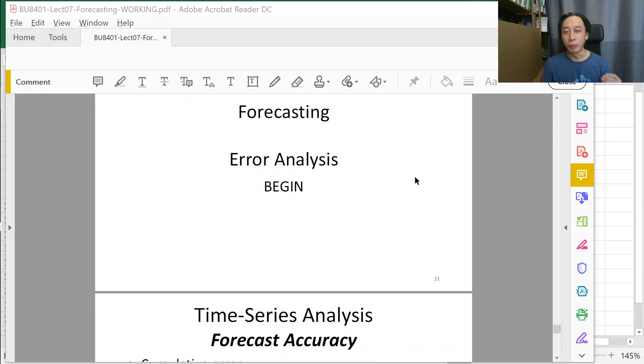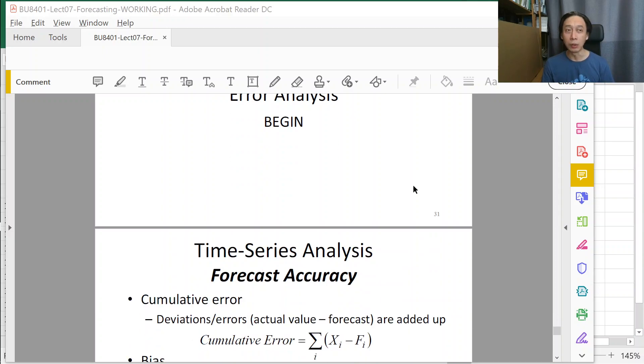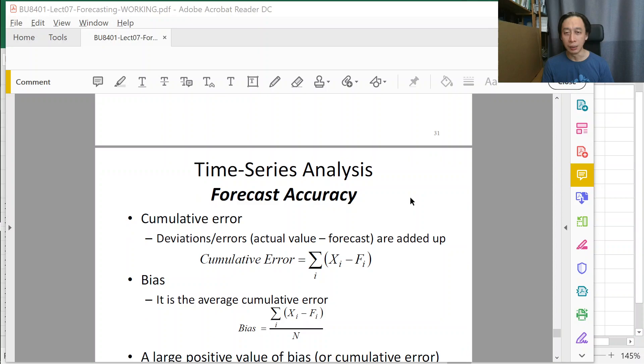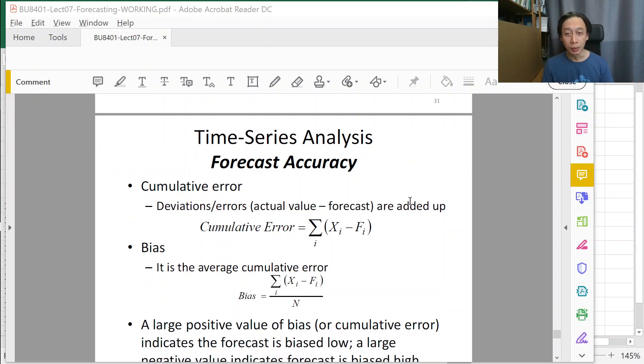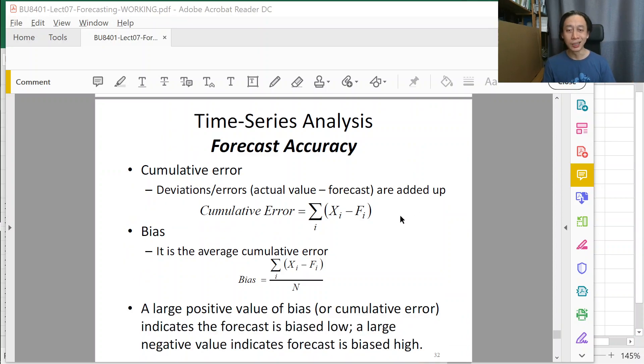Now when we forecast, we will not always get the right future value. That much we know for sure. So it is a must that we have some sort of control and record over our errors. Errors will be the deviations from the actual data.